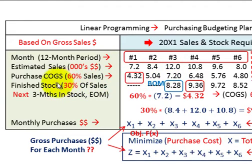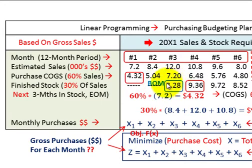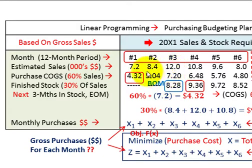We also have a finished stock requirement. The finished stock we're going to maintain by month is going to be based on 30% of the sales of the next three months, maintained at the end of the month. For the first month, looking at months two, three, and four — the beginning of month stock here is 8.28. That's the amount of stock in dollars we're going to be dealing with, derived from those first three months we're looking at.